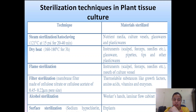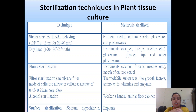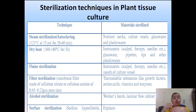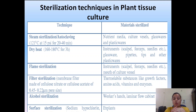Surface sterilization is done with explants. It is simply treatment of the explants with chemicals like sodium hypochlorite, hydrogen peroxide, or mercuric chloride. Depending on the explant, different chemicals are used. For a hard explant like a seed, we can use a strong chemical like hydrogen peroxide; for soft parts like a leaf, we use mild reagents like sodium hypochlorite. Distilled water is also used in surface sterilization.